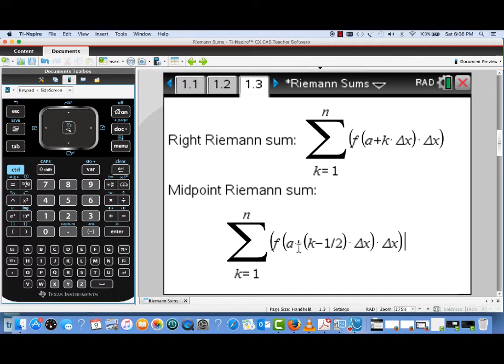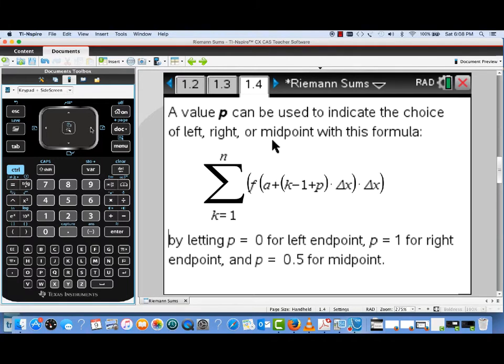Here's another formulation where the choice has been made of the right endpoint of each subinterval. Notice that when k equals 1, we're at A plus delta x. The bottom summation would be what the summation would look like if we picked the midpoint of each of those subintervals.